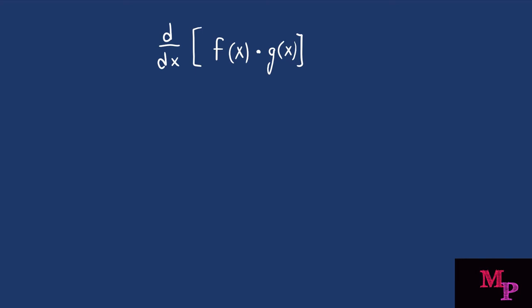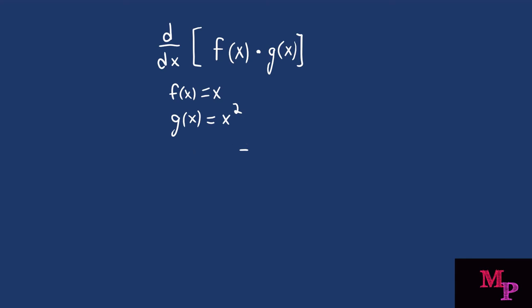Welcome to Mathematical Production. Today we're going over how to use the product rule when solving derivatives. You want to use the product rule whenever you're taking the derivative of two functions that are being multiplied together and it can't be further simplified. For example, if f(x) = x and g(x) = x², you would not need the product rule because x times x² simplifies to x³. But if instead you had x times sine of x, that can't be further simplified — and that's where the product rule comes in handy.